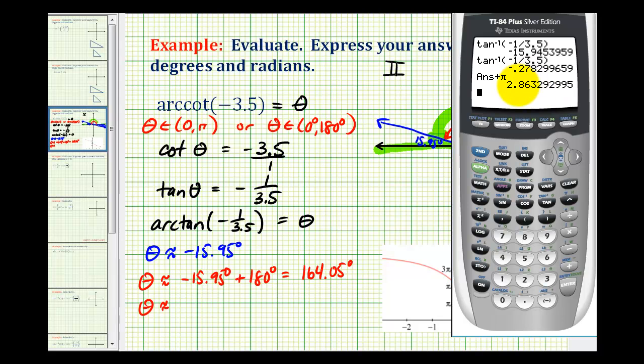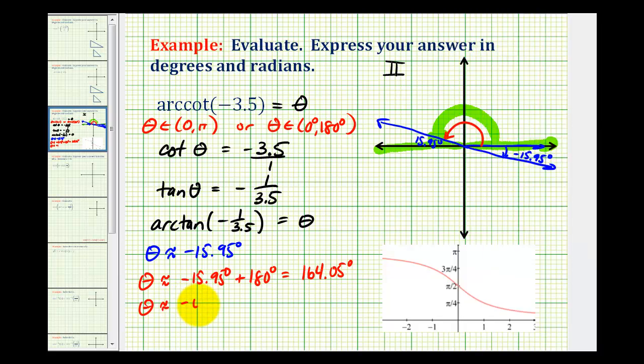So again, the calculator gave us approximately negative 0.28 radians. And then we added pi to this to come up with the angle that we wanted, which was approximately 2.86 radians. Okay, I hope this explanation was helpful.